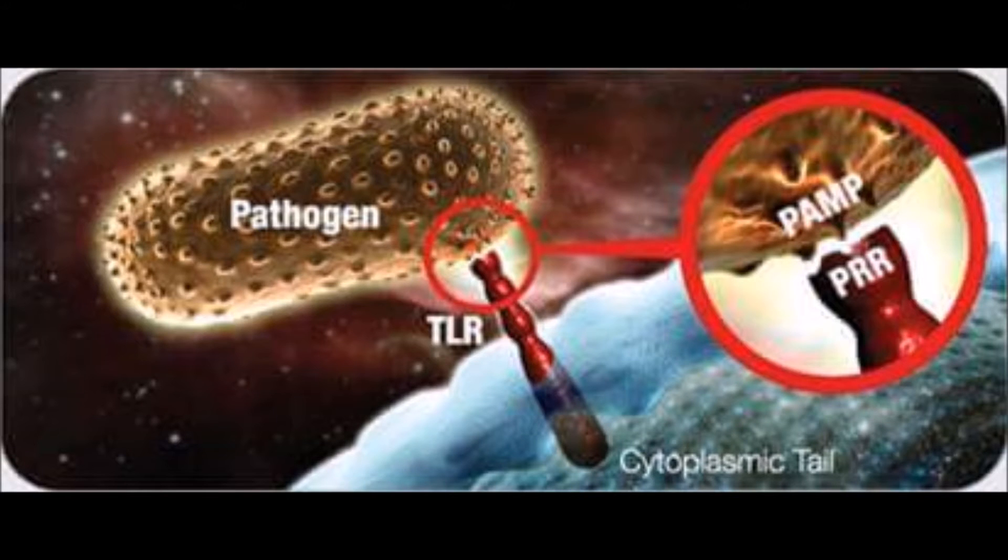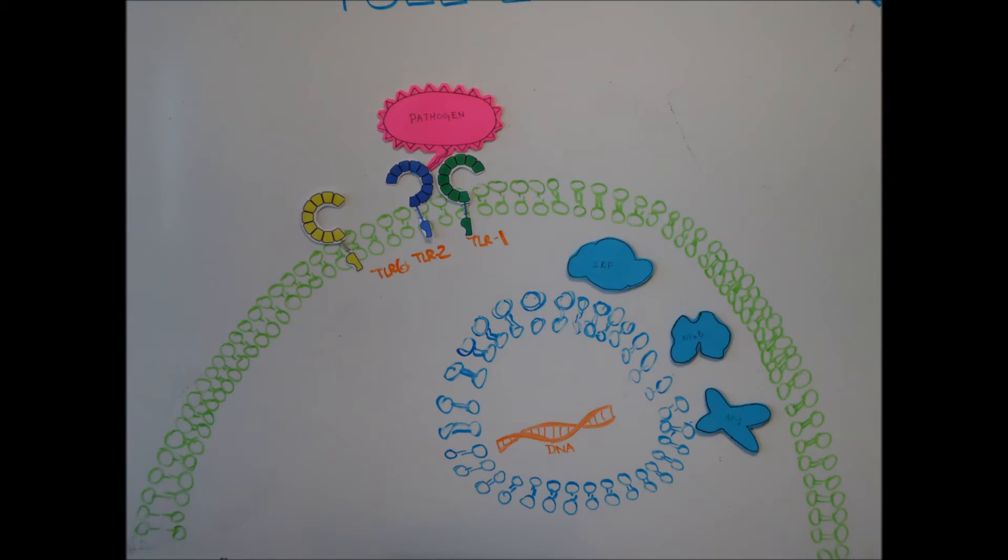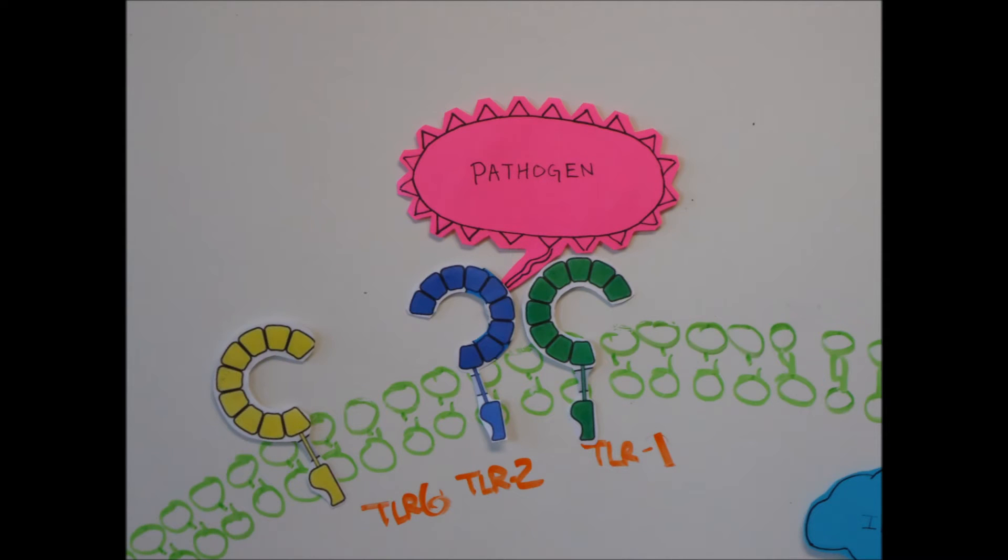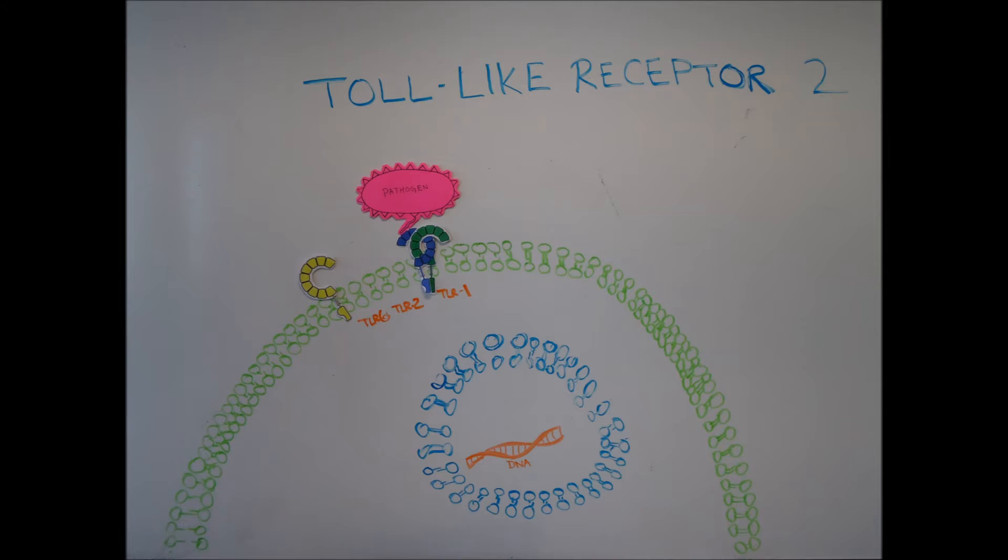TLRs are essentially sensors for microbes such as bacteria, fungi, and viruses. When a ligand or PAMP binds to TLR2 and another TLR such as TLR1 or TLR6, it forms a combination of proteins called a heterodimer.